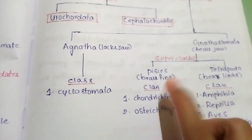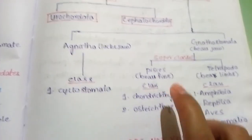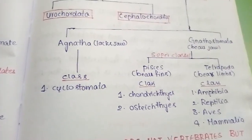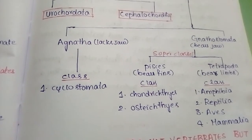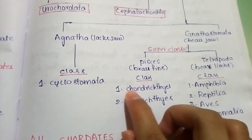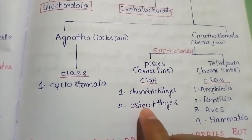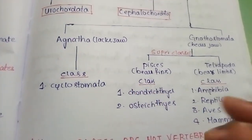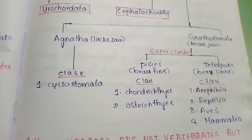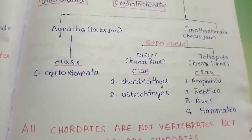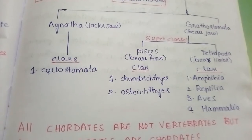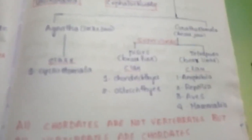Gnathostomata is further divided into two super classes: Pisces and Tetrapoda. Under Pisces, there are two classes — Chondrichthyes, which have a cartilaginous vertebral column, and Osteichthyes, which have a bony vertebral column. Tetrapoda means four limbs — four feet. Tetrapods include Amphibia, Reptilia, Aves, and Mammalia.